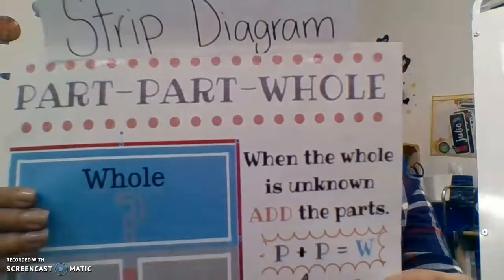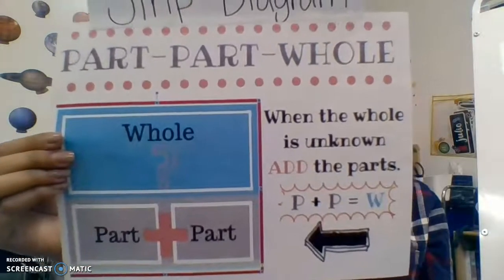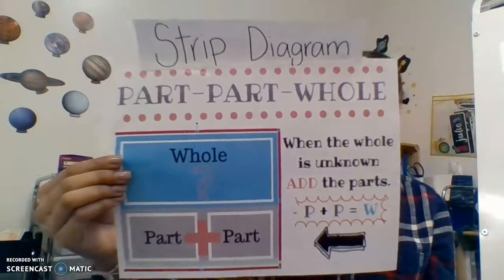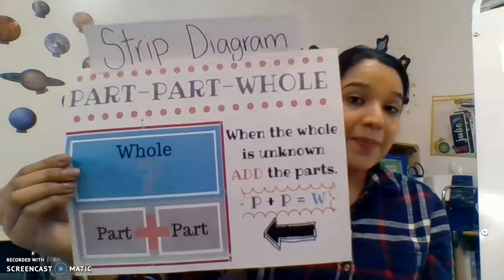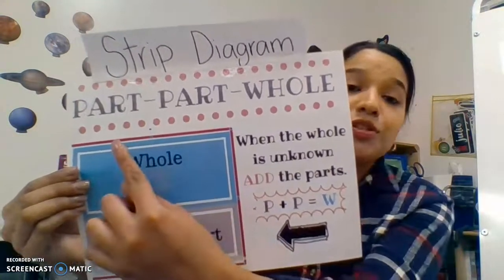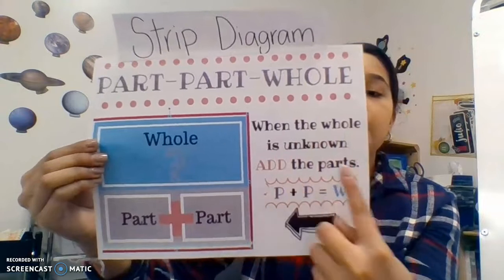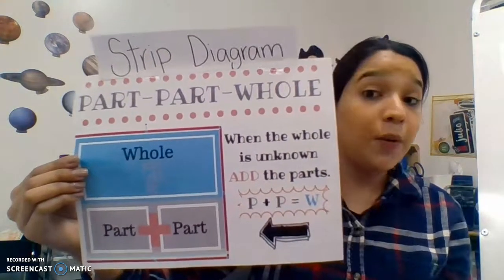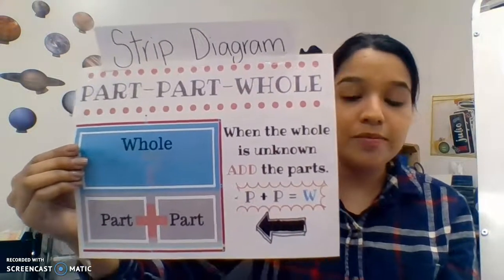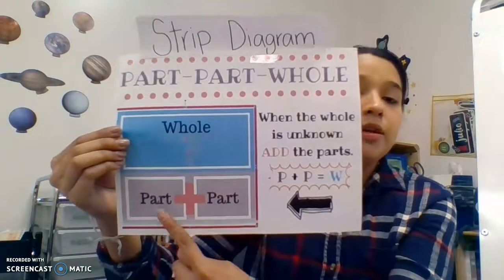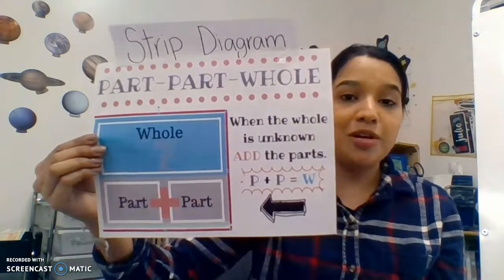We're going to start off with strip diagram. This is a new vocabulary word that we learned yesterday, so let's say it all together: strip diagram. So a strip diagram has a part, part, whole. When the whole is unknown, you add the parts. Part plus part equals our whole. This helps with addition word problems.